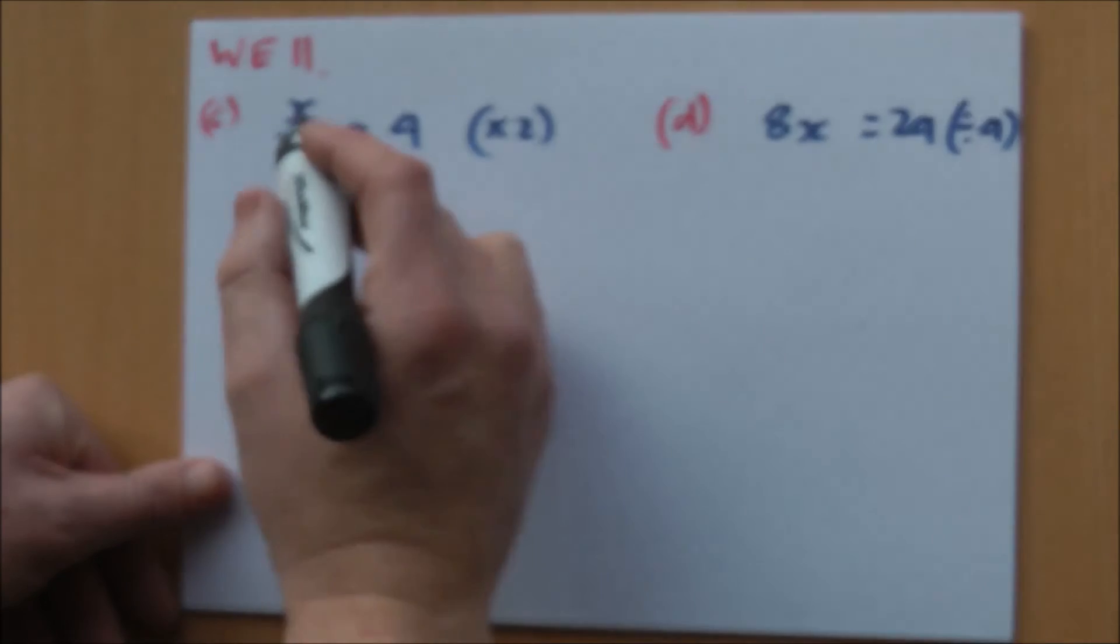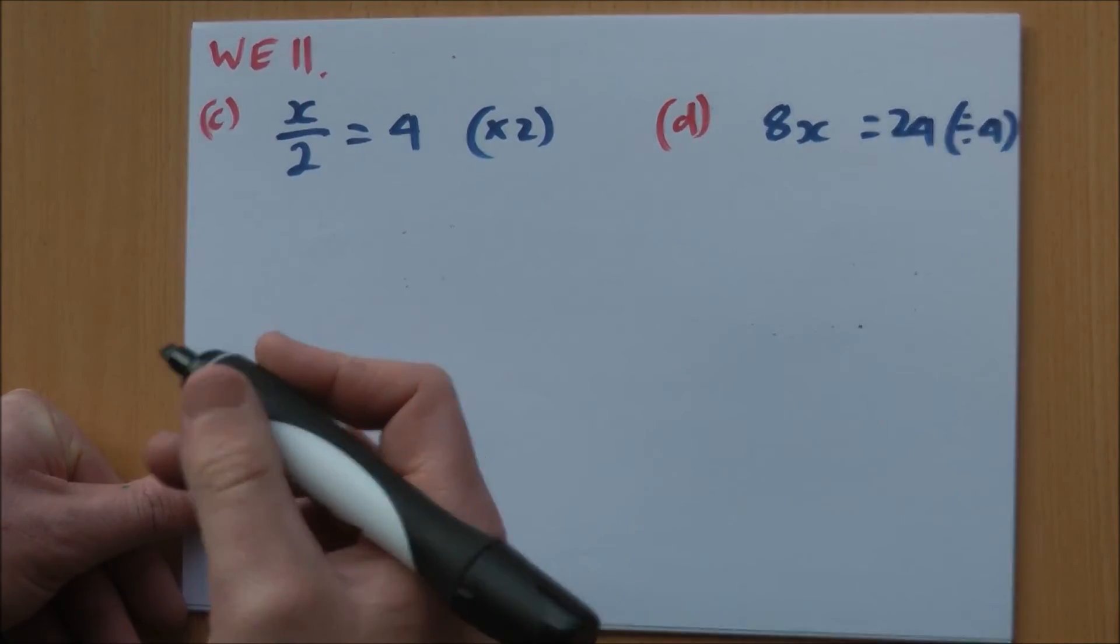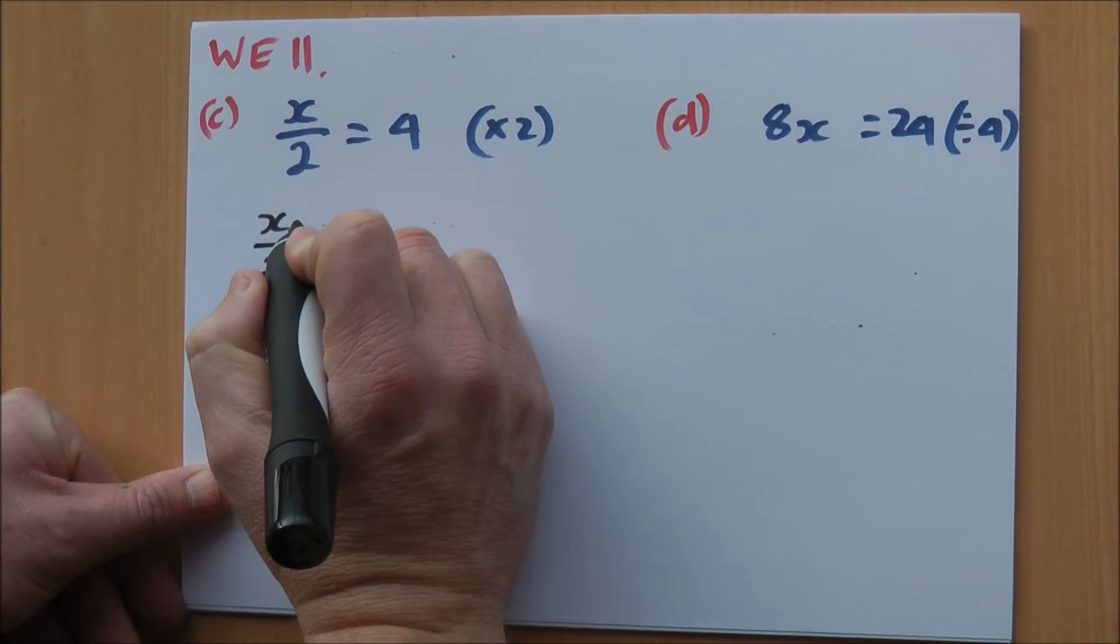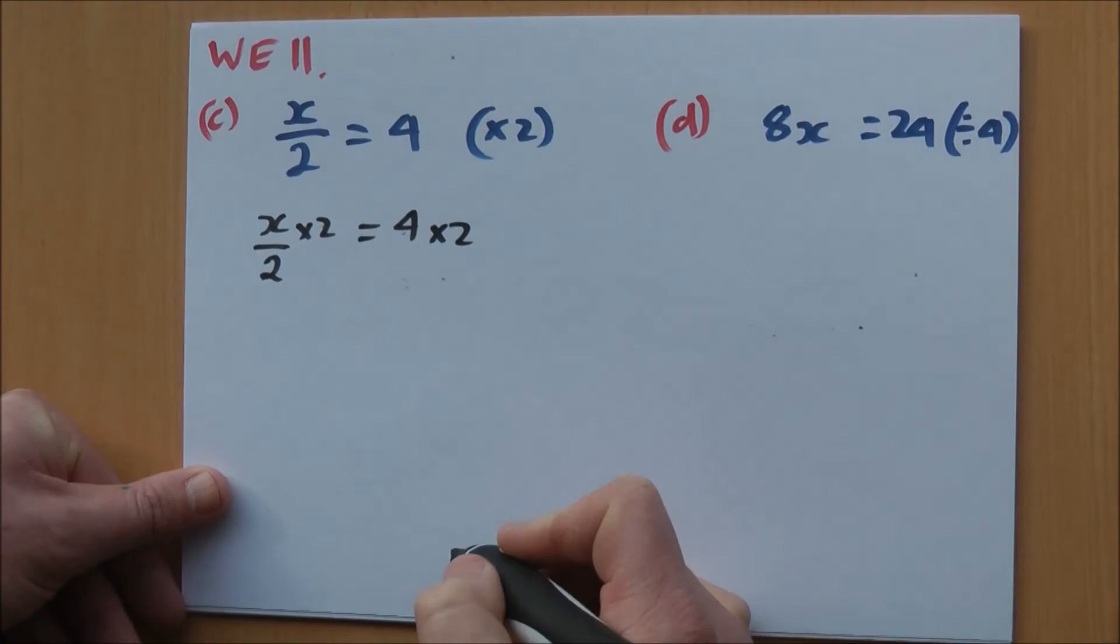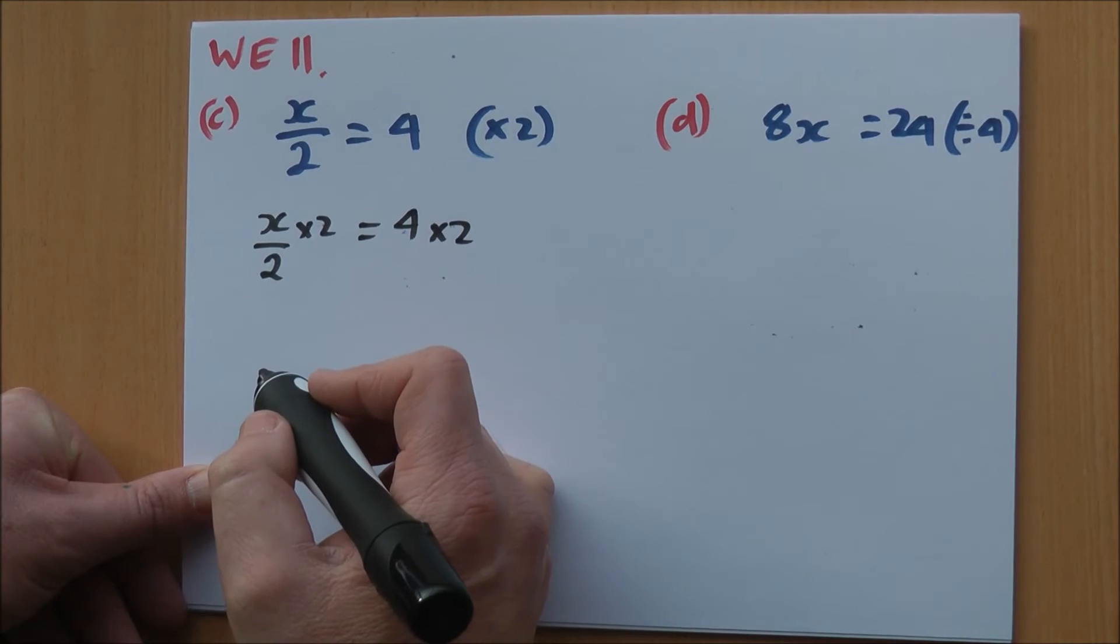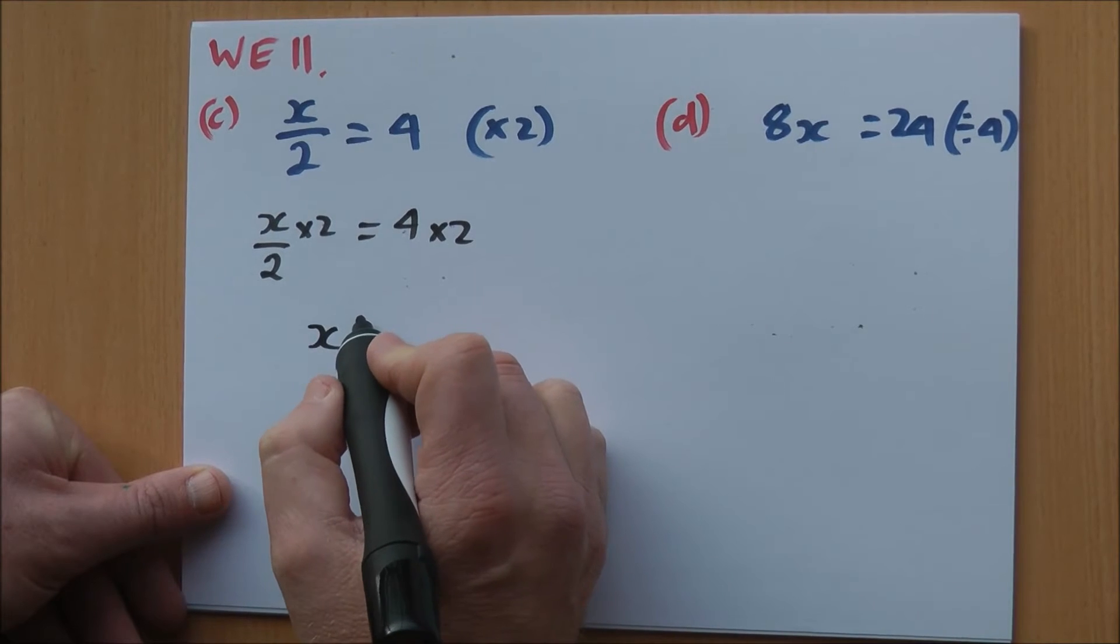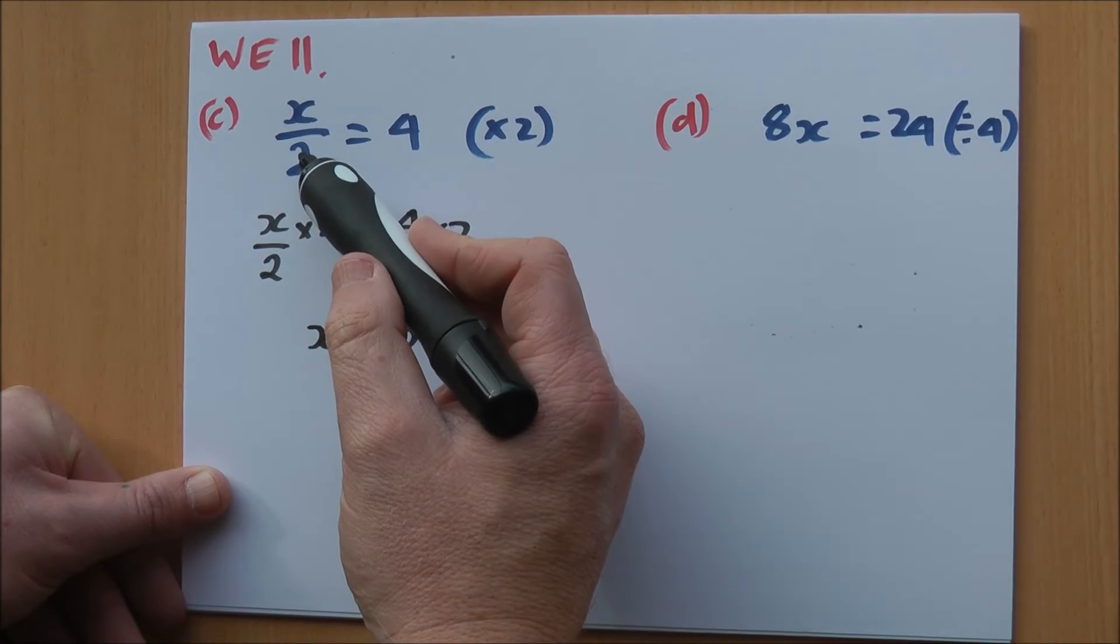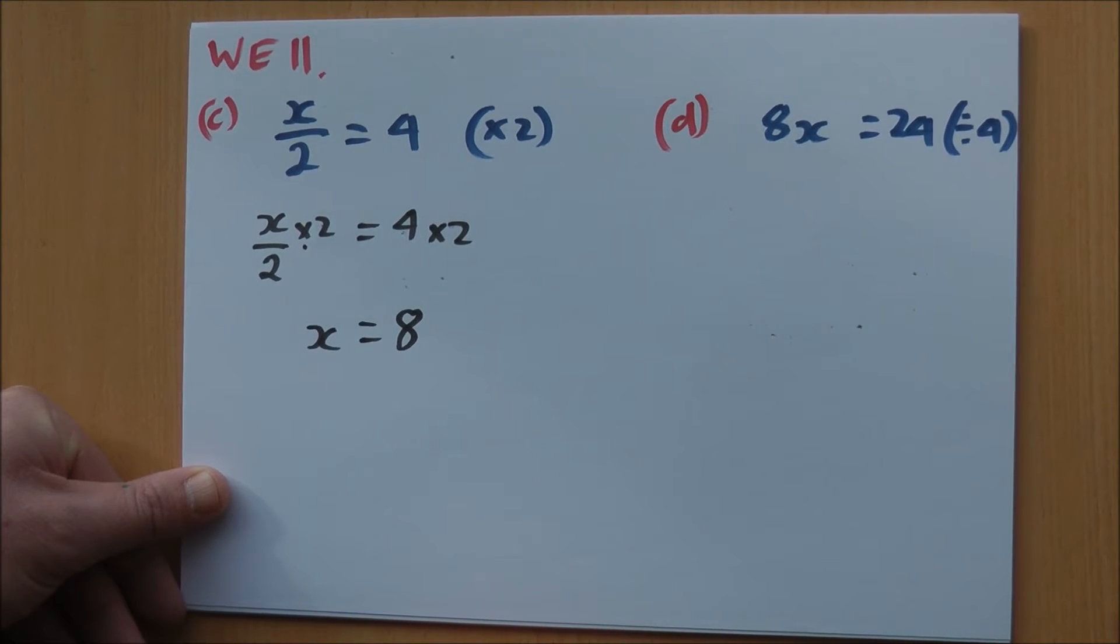Part C. x over 2 equals 4, and I want to multiply both sides by 2. So I'm going to have x over 2 times 2 equals 4 times 2. Now, what I've got on my left hand side is x times 2 divided by 2. 2 divided by 2 is 1, x times 1 is just x. 4 times 2 is 8. And you can see in this case, the inverse of divided by 2 is times 2. I multiplied both sides by 2 and I've found my solution, x equals 8.